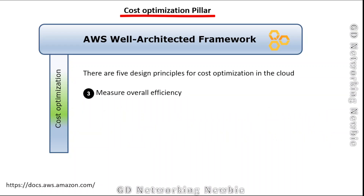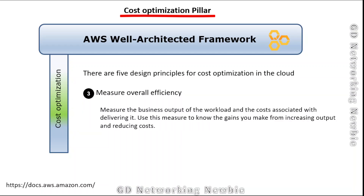The third principle is measure overall efficiency. Measure the business output of the workload and the cost associated with delivering it, and use that measure to know the gains you make from increasing output or reducing costs. Essentially, measure the return on what you are investing in.